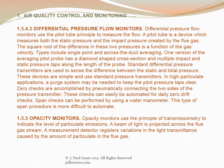Opacity monitors use the principle of transmissometry to indicate the level of particulate emissions. A beam of light is projected across the flue gas stream, and a measurement detector registers variations in light transmittance caused by the amount of particulate in the flue gas.